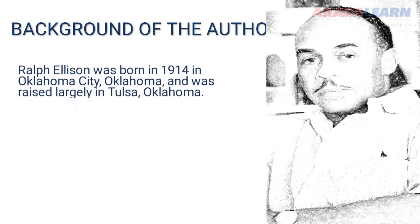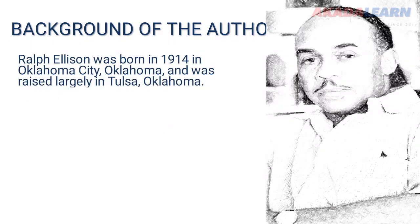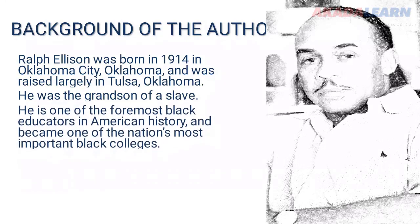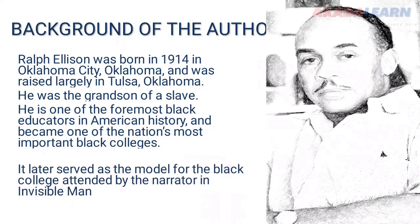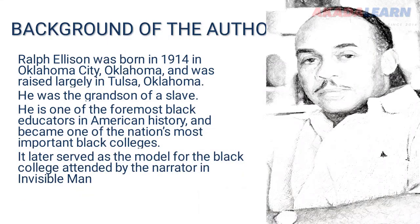This is Ralph Ellison, the author of Invisible Man. Ralph Ellison was born in 1914 in Oklahoma City, Oklahoma, and was raised largely in Tulsa, Oklahoma. He was the grandson of a slave, and he became one of the foremost figures in black education in American history, later serving as the model for the black college attended by the narrator in Invisible Man.